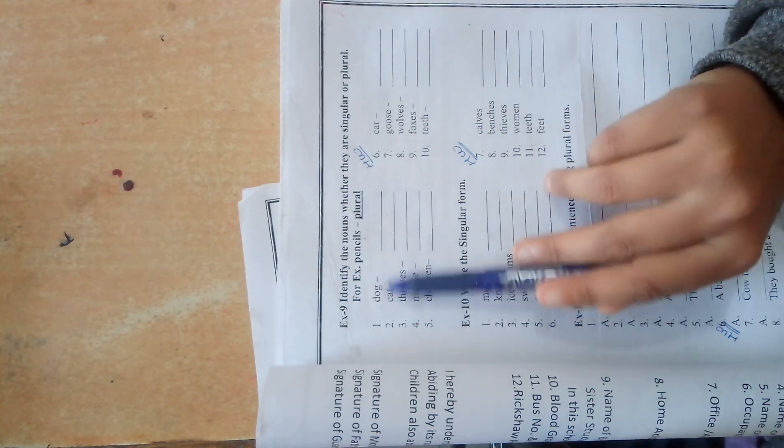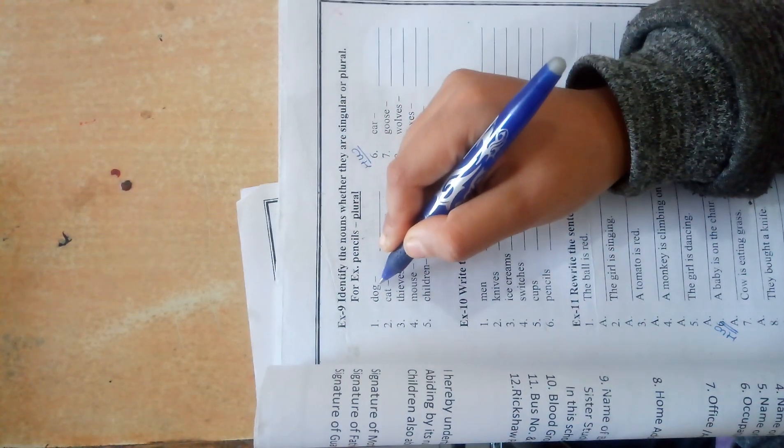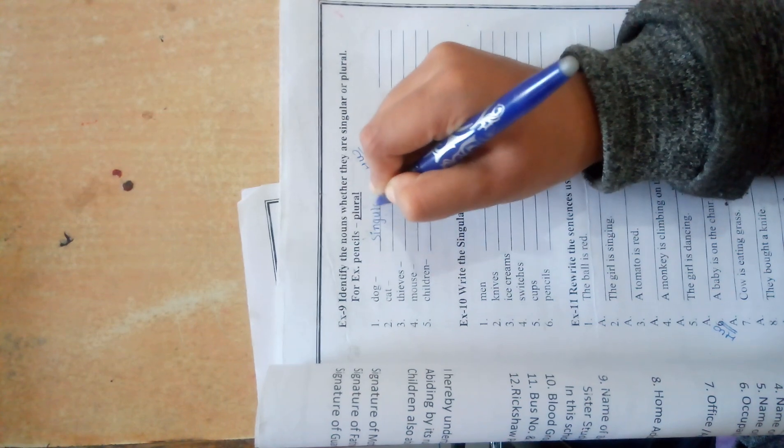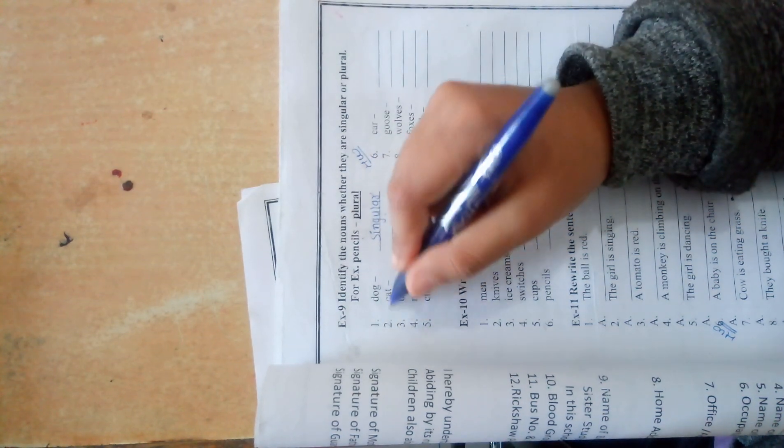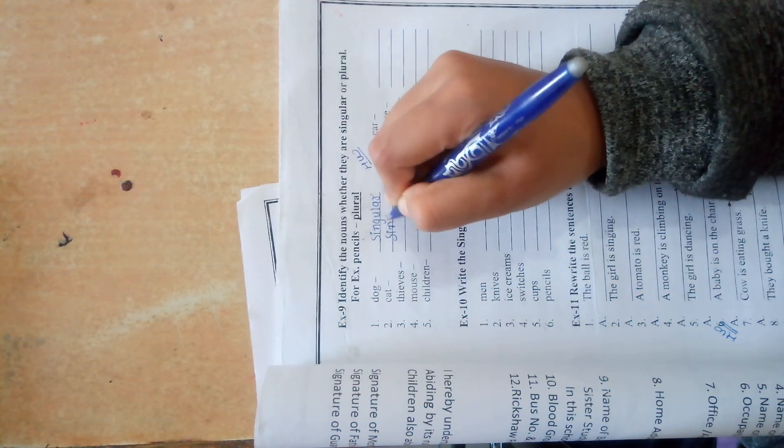Number 1: dog. It is singular because there is no S or ES. Next, cat. It is singular because there is no S or ES.